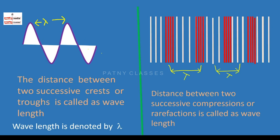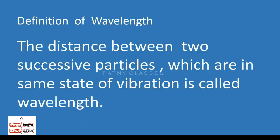In case of transverse waves, the distance between two successive crests or troughs is called wavelength. In case of longitudinal waves, the distance between two successive compressions or rarefactions is called wavelength. From the above discussion, we can define wavelength as the distance between two successive particles which are in the same state of vibration.